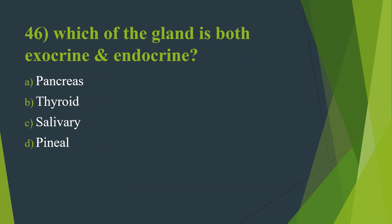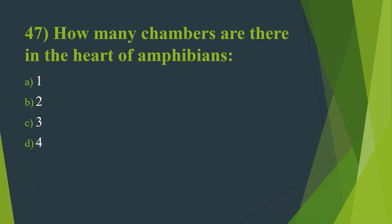Forty-sixth question: Which gland is both exocrine and endocrine? Option A, Pancreas. Option B, Thyroid. Option C, Salivary. Option D, Pineal. Answer is Option A, Pancreas.